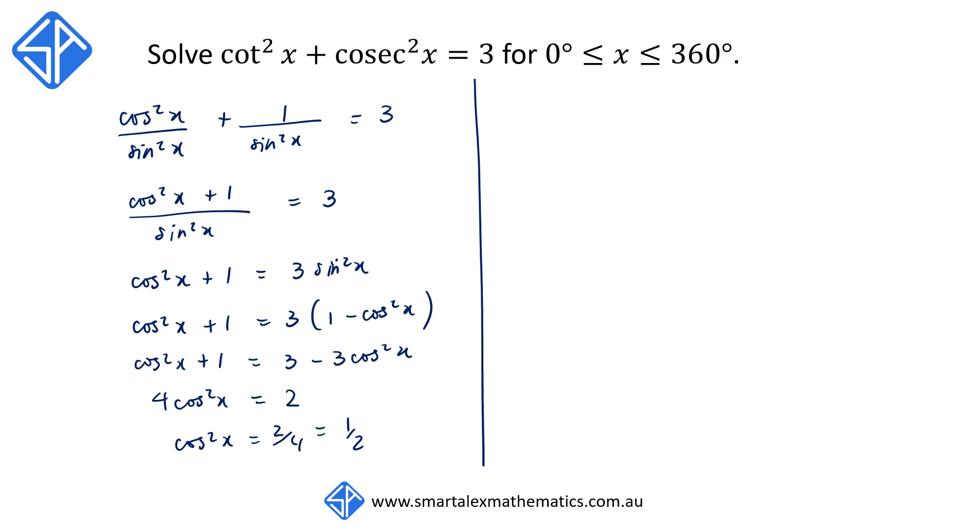So now what we need to solve is the equation cos squared x is equal to a half. We take the square root of both sides remembering that we get both the positive and negative answer of 1 over root 2.